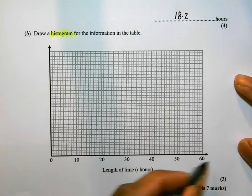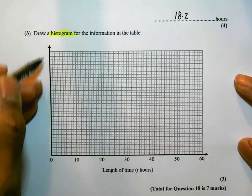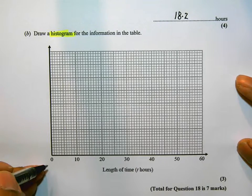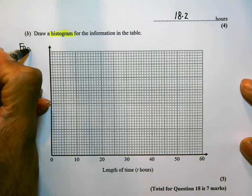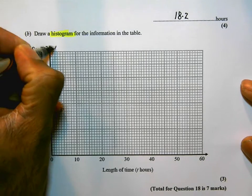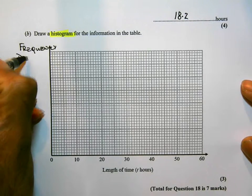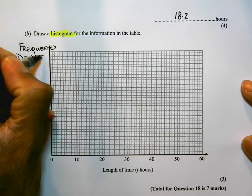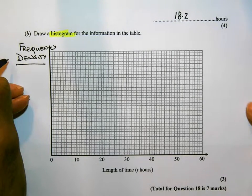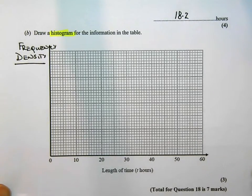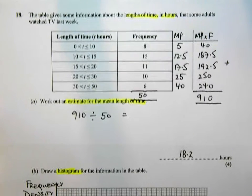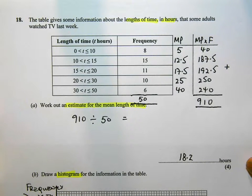They've labeled this length of time, and the vertical axis is not labeled at all. In a histogram, the vertical axis is frequency density. And we need to work out the frequency density from our table above.